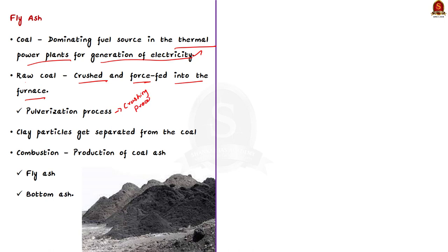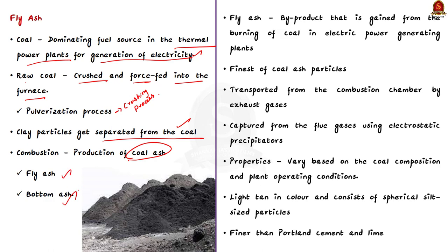During the pulverization process, clay particles entrapped in the cracks of coal get separated from the coal. On combustion in the furnace, these clay particles along with other non-combustible matter result in the production of coal ash. This coal ash produced at coal-fired thermal power plants is generally classified into two types: fly ash and bottom ash.